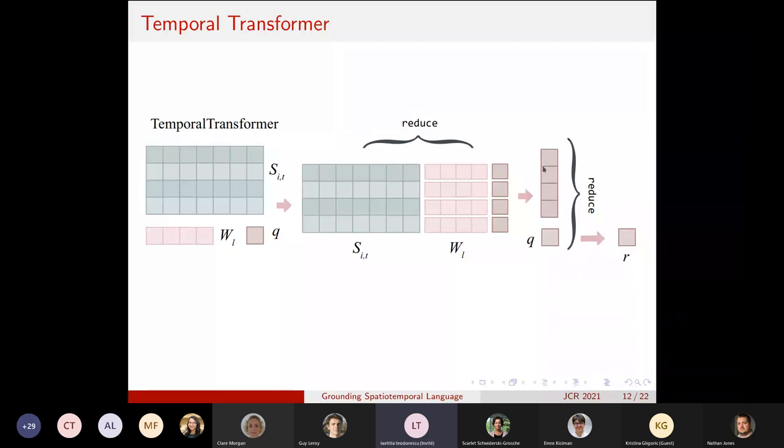This produces a vector which has the same length as the number of objects. Then this is queried and reduced again to produce the final reward token R, which is used for prediction.